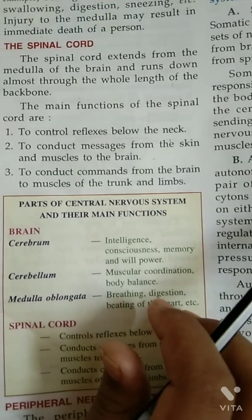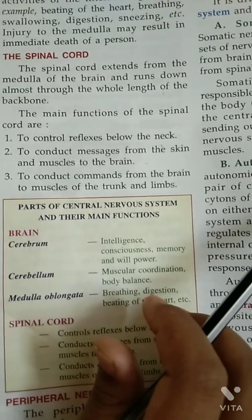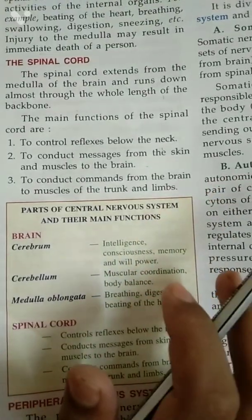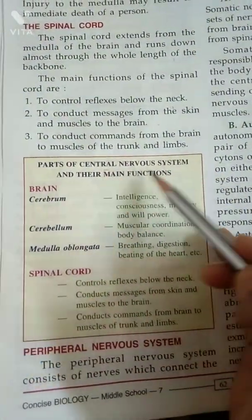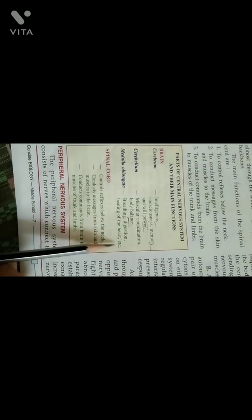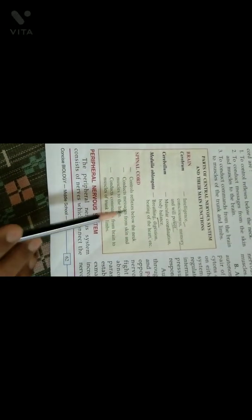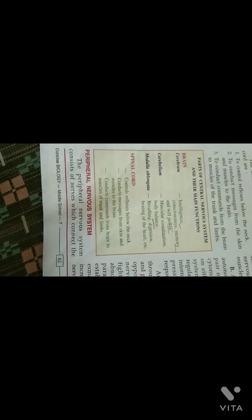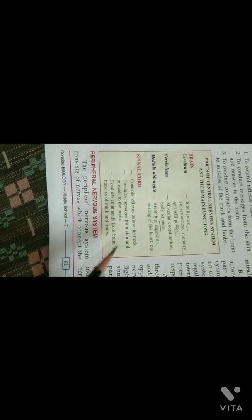Summary of parts of the central nervous system and their functions: Cerebrum — intelligence, consciousness, memory, and willpower control. Cerebellum — muscular coordination. Medulla oblongata — breathing, digestion, beating of heart, and overall involuntary actions. Spinal cord — controls reflexes below the neck, conducts messages from skin and muscles to the brain, and conducts commands from the brain to muscles of the trunk and limbs.